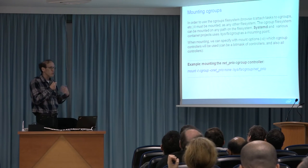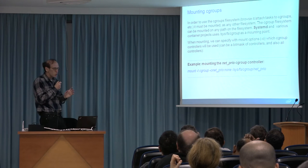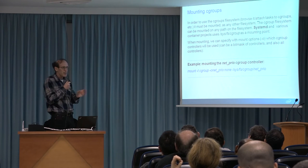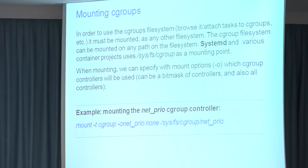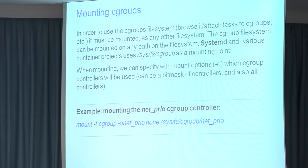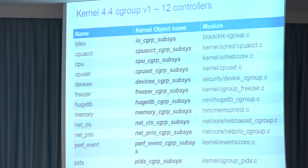For example, system D uses none of the controllers because it simply uses Cgroups not for resource management but for service management. The grouping of processes is the essence of the implementation. Here we see the 12 controllers currently in kernel 4.4. We'll see examples of how to use several of them, like devices, memory, the network controller, and the PIDs controller, which is quite recent.